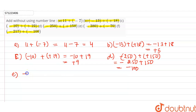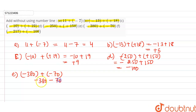Part E is –380 + (–70). Plus minus is minus, so –380 – 70. Minus minus is plus but the sign will be of the greater one, so 380 + 70 = 450. The answer is –450.